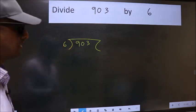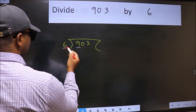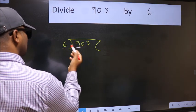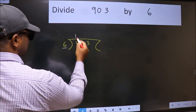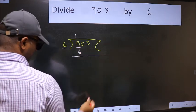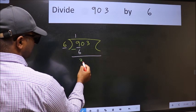Next. Here we have 9 and here 6. A number close to 9 in 6 table is 6×1=6. Now we should subtract. We get 3.